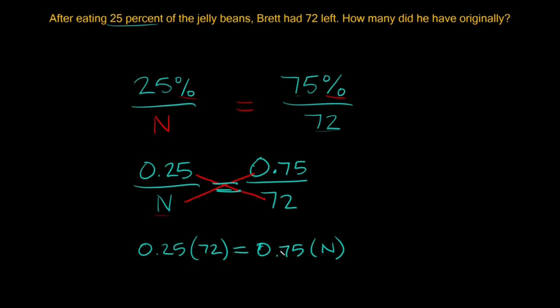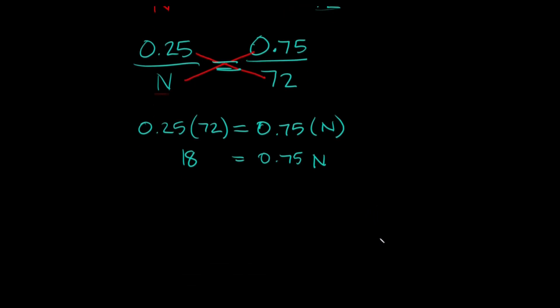Now we're gonna simplify some stuff here. So 0.25 times 72 that's equal to 18 and then that's gonna be equal to 0.75 times n. Let's scroll down a little bit.